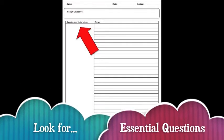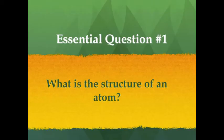While you're listening, look for essential questions. When you find them, write them down on the left-hand side of your Cornell note sheet. To get started, here's essential question number one: What is the structure of an atom?